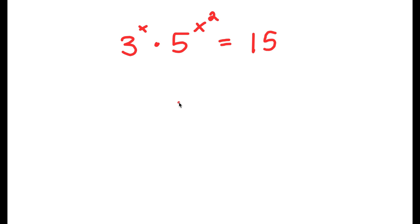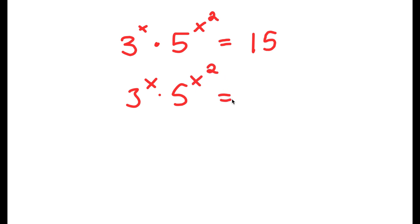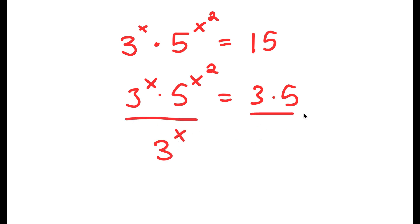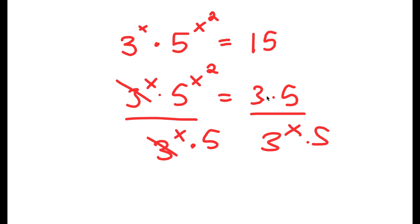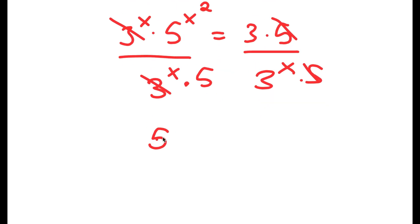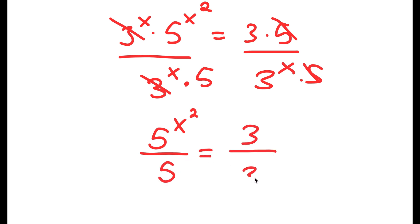In this problem, I have 3 to the power of x times 5 to the power of x squared is equal to 15. I'm going to first start by rewriting 15 as 3 times 5. So now I have 3 to the power of x times 5 to the power of x squared is equal to 3 times 5. I'm going to divide both sides by 3 to the power of x as well as 5, so the 3 to the power of x's cancel and the 5's cancel. Now I get 5 to the power of x squared over 5 is equal to 3 over 3 to the power of x.